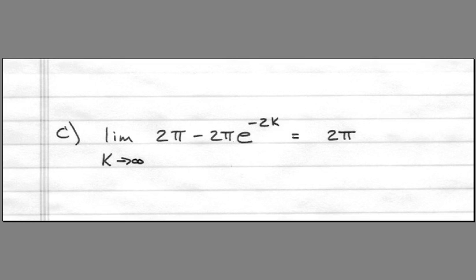The last portion of the problem can be found in the next section. What if k were to be stretched infinitely to the right? The limit as k goes to infinity of 2 pi minus 2 pi times e to the minus 2k is just 2 pi.